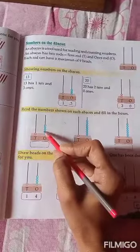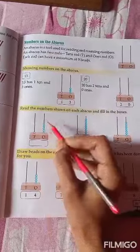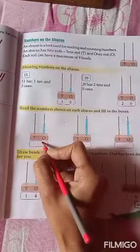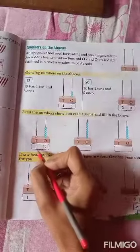1, 2, 3, 4, 5. How many beads are there? 1, 2, 3, 4, 5. So, first you will write 5. How many beads? 1.